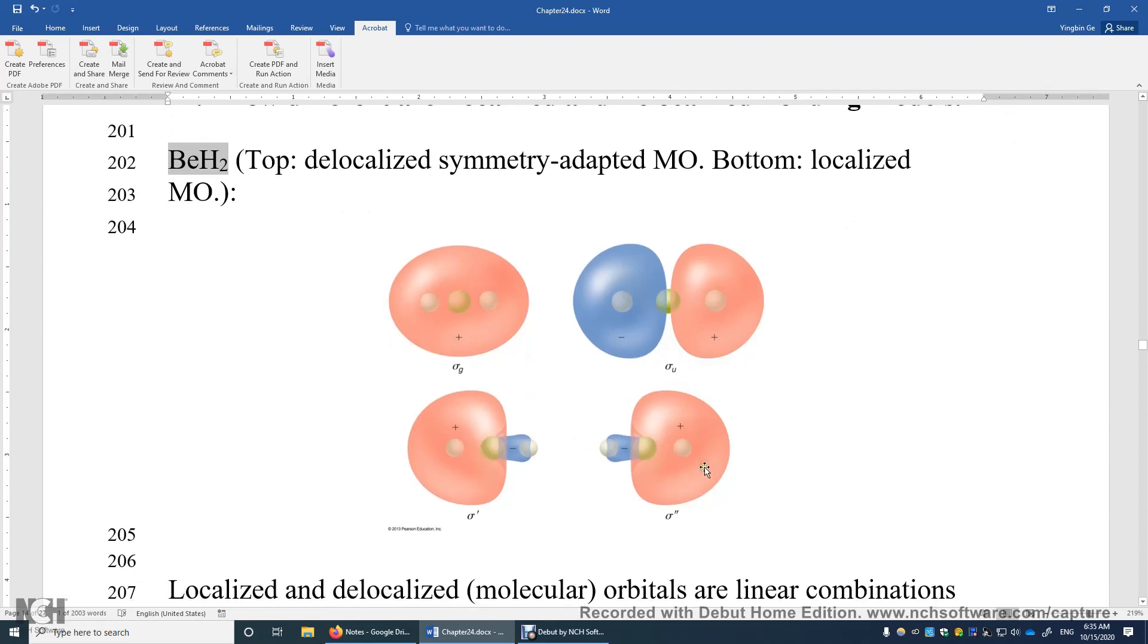These two are localized MO. In these two MO orbitals, Beryllium first makes its 2s orbital and one of the 2p orbitals to form two sp-hybrid orbitals.